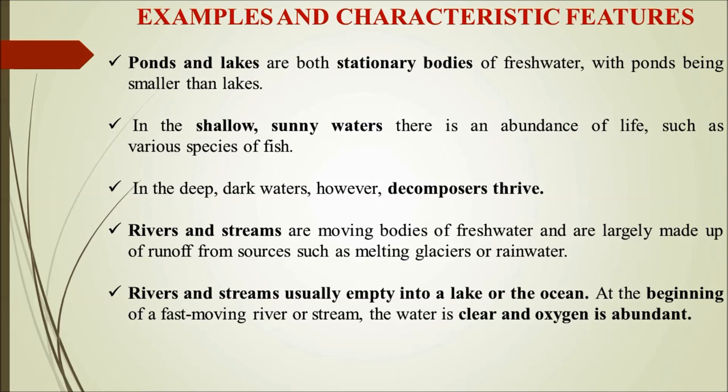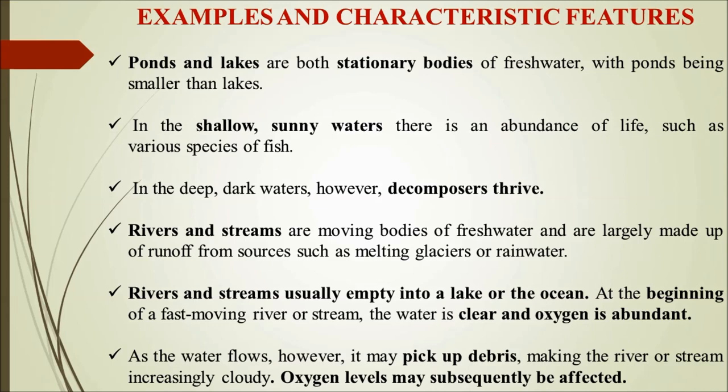At the beginning of a river or stream, water flows fast and has more oxygen and is clear. But gradually, as it moves further, it picks up debris and other materials, and oxygen levels fluctuate or decrease due to the inclusion of pollutants.